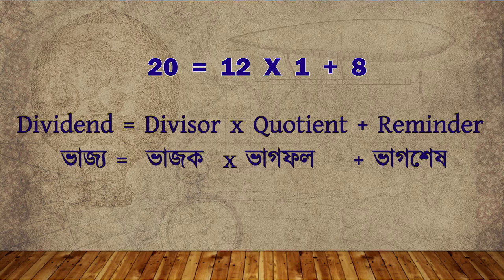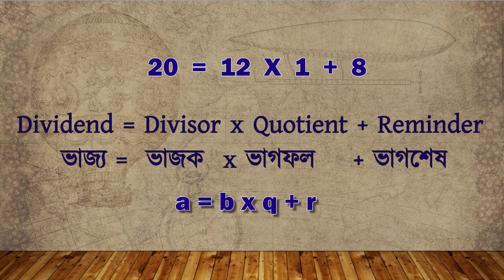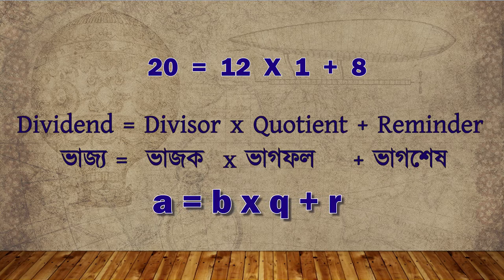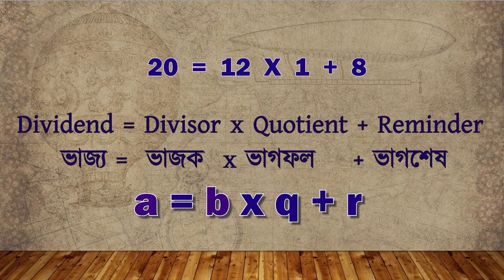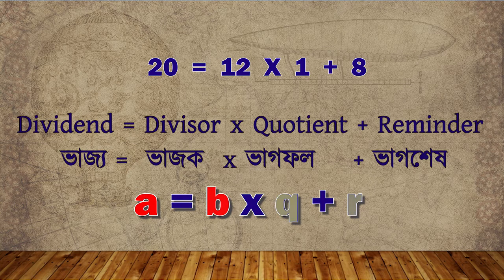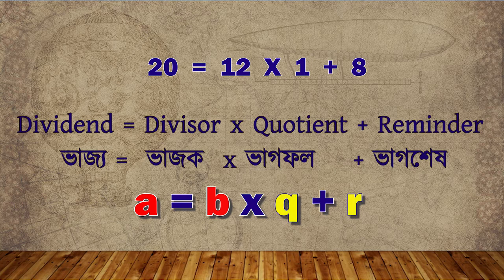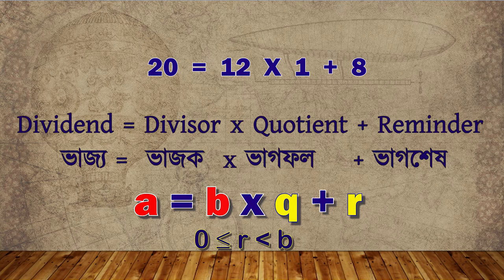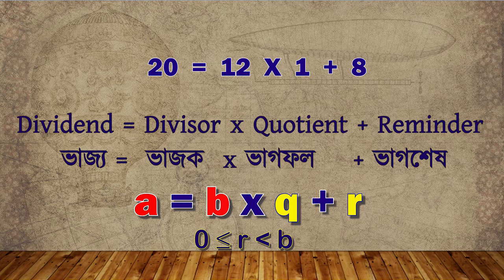It can be expressed algebraically as a is equal to b into q plus r. For given positive integers a and b, there exist unique integers q and r where r is greater than or equal to 0 and less than b. This proven statement is Euclid's Division Lemma.